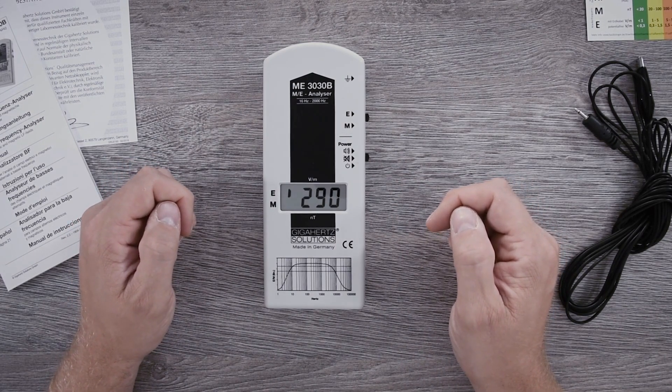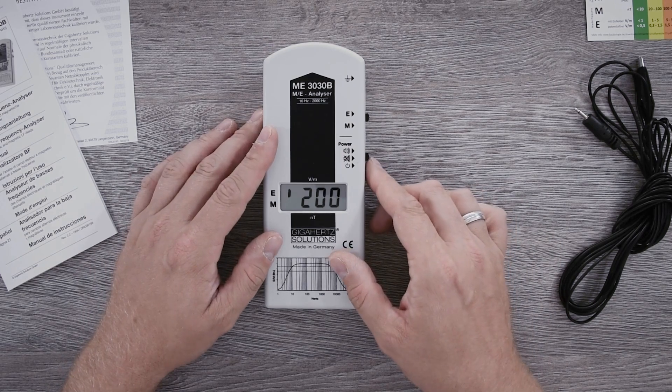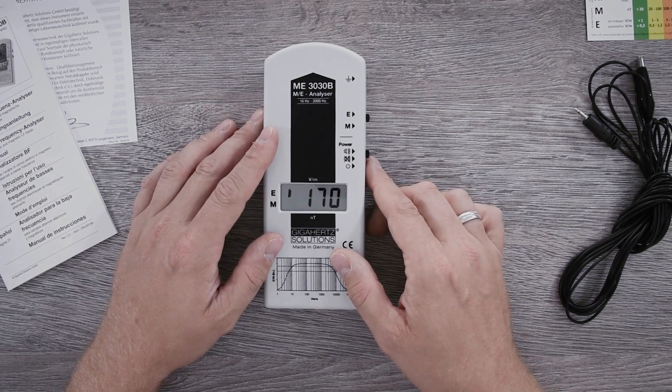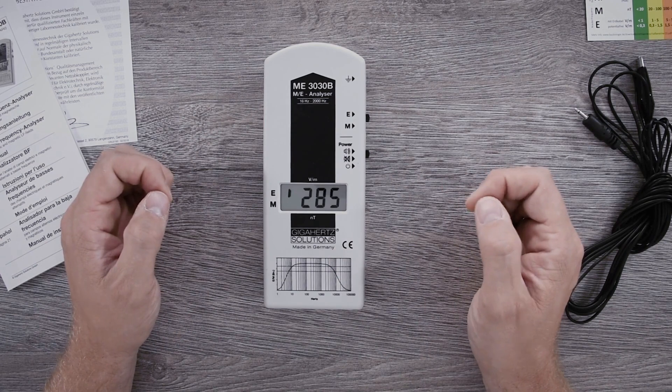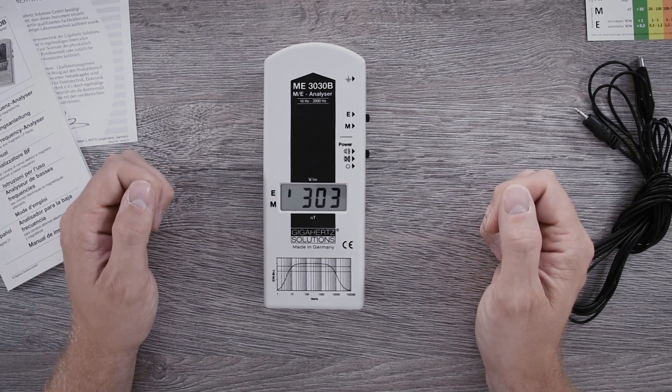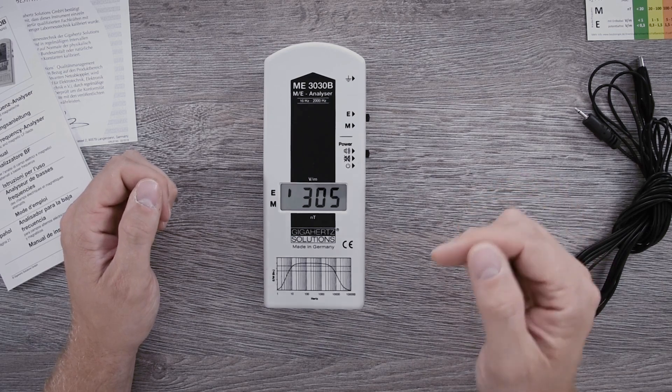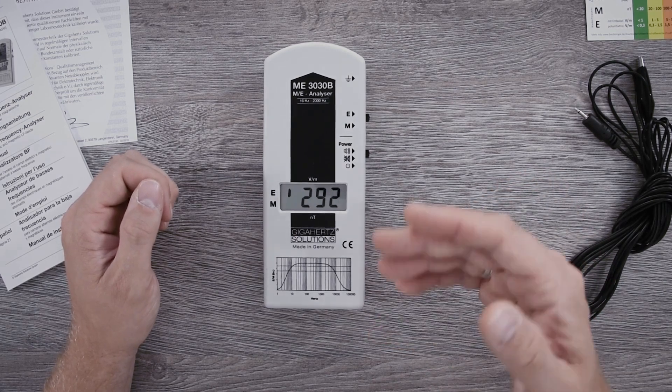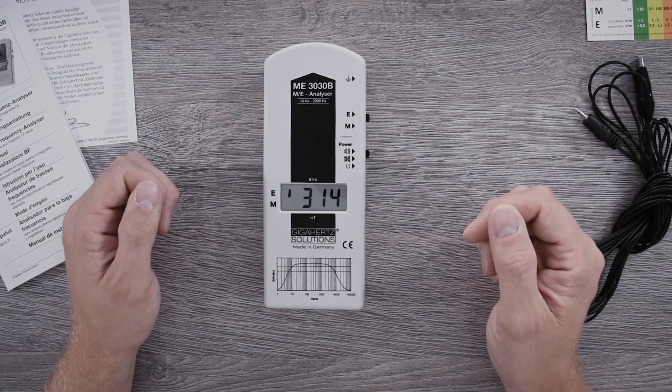To turn on an additional sound signal, you push the power switch further up. Now a field strength proportional sound signal similar to that of a Geiger counter is active. That means little field strength, weak sound signaling; a lot of field strength, strong sound signaling.